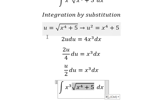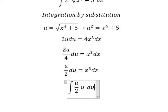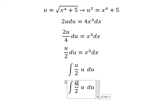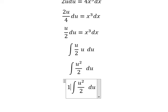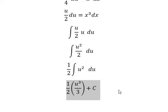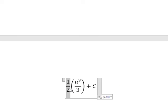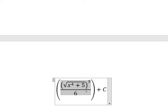We change the square root by u, and x to the power of 3 dx we change by the expression we derived. With u and u we get u squared. I put the 2 outside, and the integration of u squared gives u to the power of 3. We add c. The 2 and 3 give 6, and substituting back for u gives the final answer.